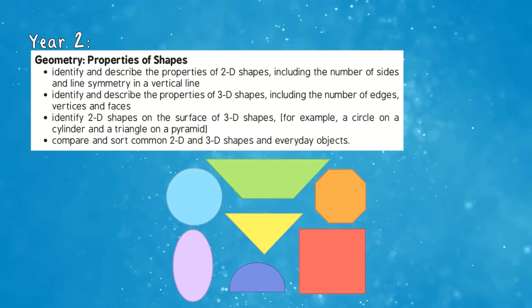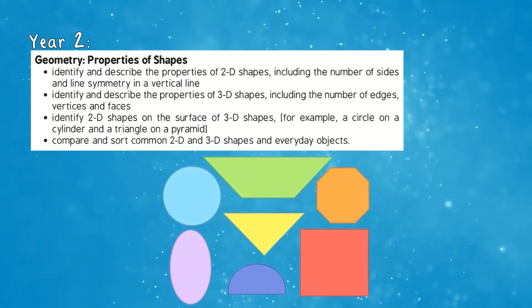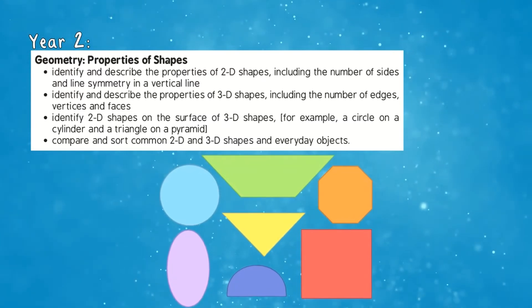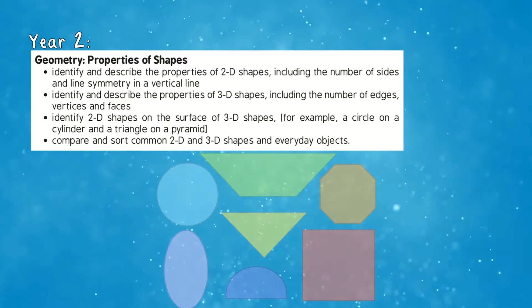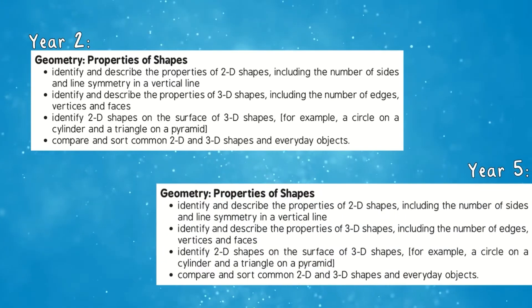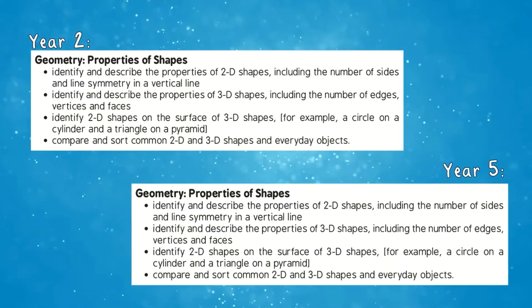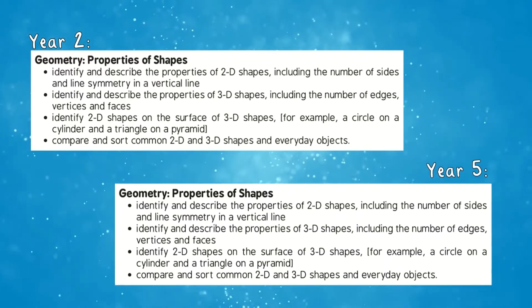Your child will be introduced to octagons along with other 2D shapes during Key Stage 1 and will be encouraged to identify them by looking at their properties. When your child reaches Key Stage 2, octagons will be introduced early on and investigated further throughout primary school.